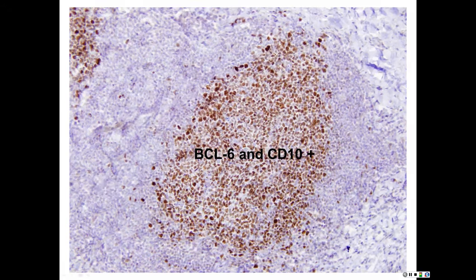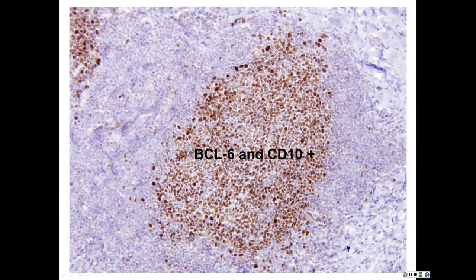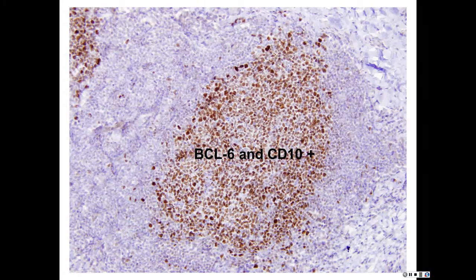The follicle center is BCL2 negative, but BCL6 and CD10 positive — those are markers for a germinal center population. So germinal center: BCL2 negative, whereas marginal and mantle are BCL2 positive. BCL6 positive, CD10 positive — that's normal.